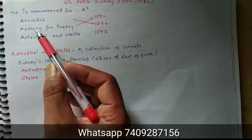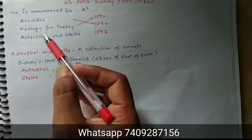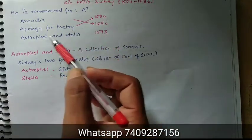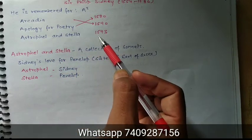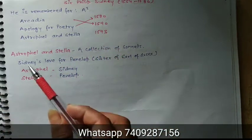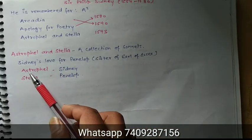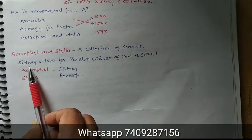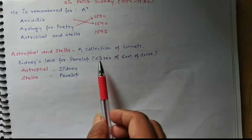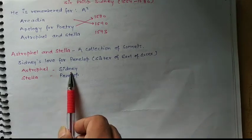Remember the publication years: Arcadia was published in 1590, Apology for Poetry in 1580, and Astrophil and Stella in 1593. Astrophil and Stella is a collection of sonnets written for Sydney's love for Penelope. Penelope was the sister of the Earl of Essex — Astrophil was Sydney and Stella was Penelope.